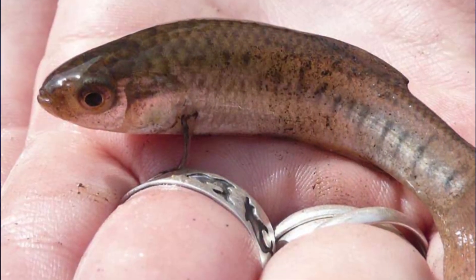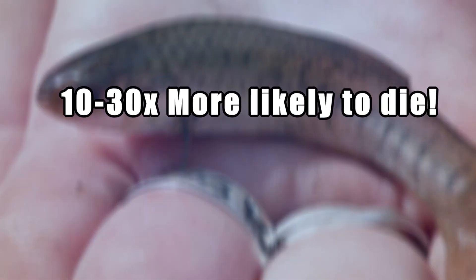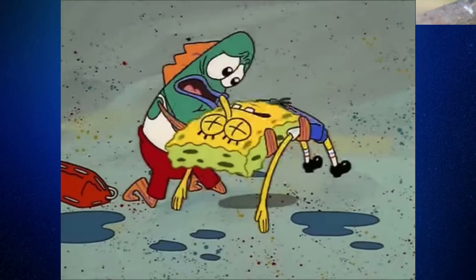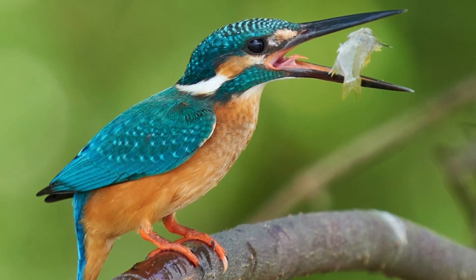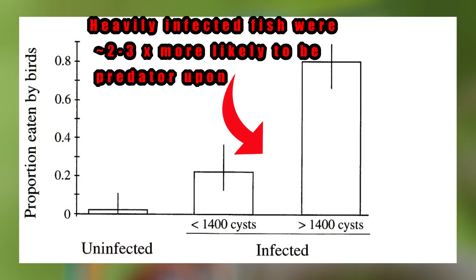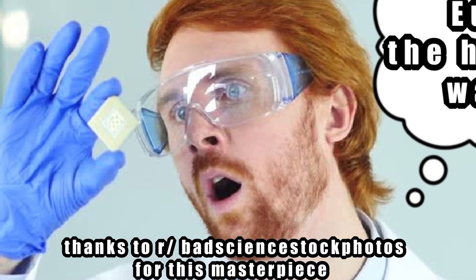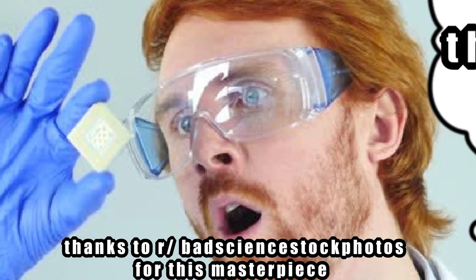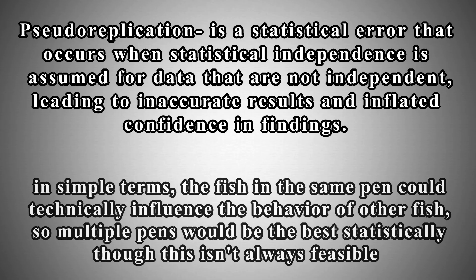What they found was that infected fish were somewhere between 10 and 30 times more likely to get eaten than their non-infected counterparts. In fact, non-infected fish had pretty much negligible death, where the infected fish showed more than 50% of them eaten throughout this experiment. The data also showed that the more heavily infected a fish was, the more likely it was to be consumed. Due to these experiments, the researchers largely concluded that these movements of infected fish weren't just quirks of being infected, but were intentional to increase the predation risk for the fish.